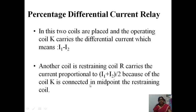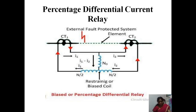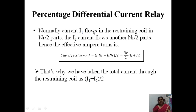The restraining coil R carries current proportional to (I1 + I2)/2, because coil K is connected at the midpoint of the restraining coil. Normally, current I1 flows in the Nr/2 part and I2 flows in the other Nr/2 part. Hence, the effective ampere-turns will be I1·Nr + I2·Nr divided by 2, which equals Nr/2 × (I1 + I2). That is why the total current through the restraining coil is taken as (I1 + I2)/2.